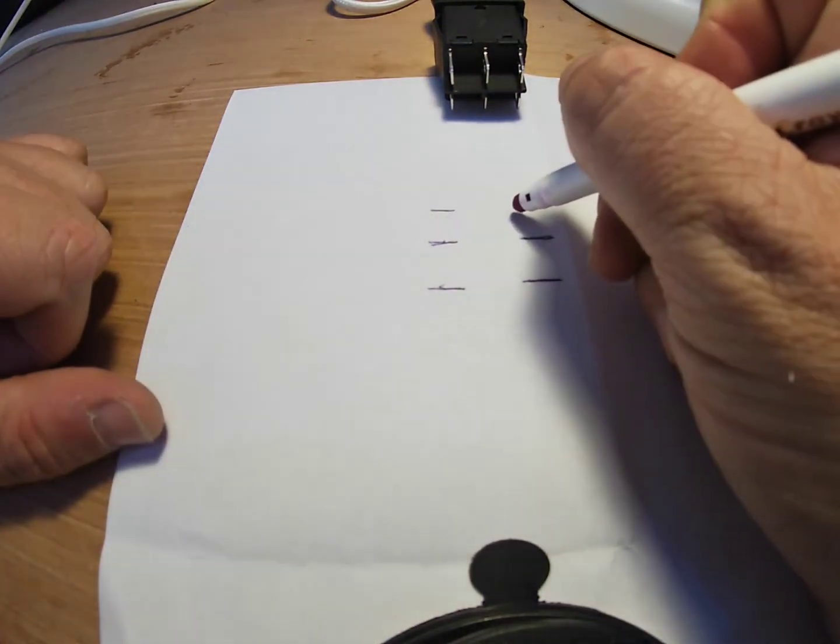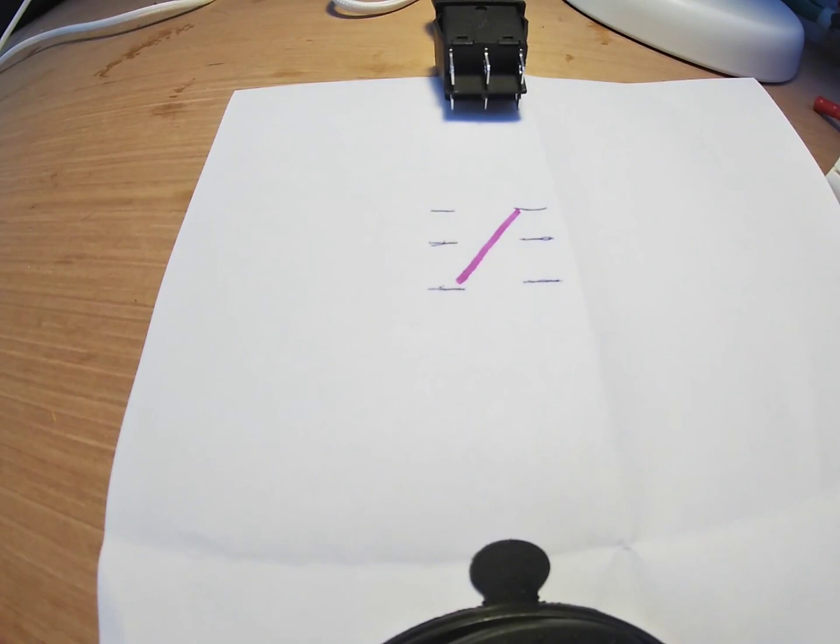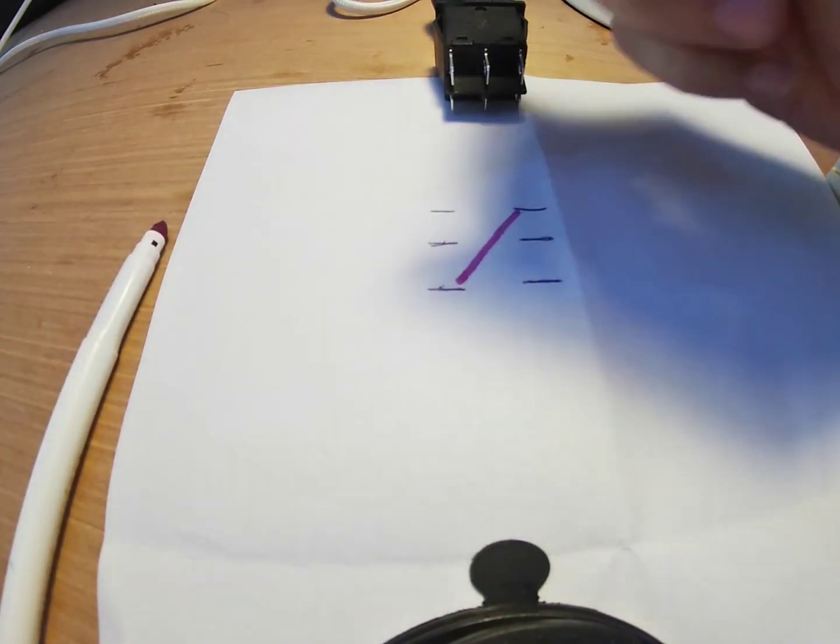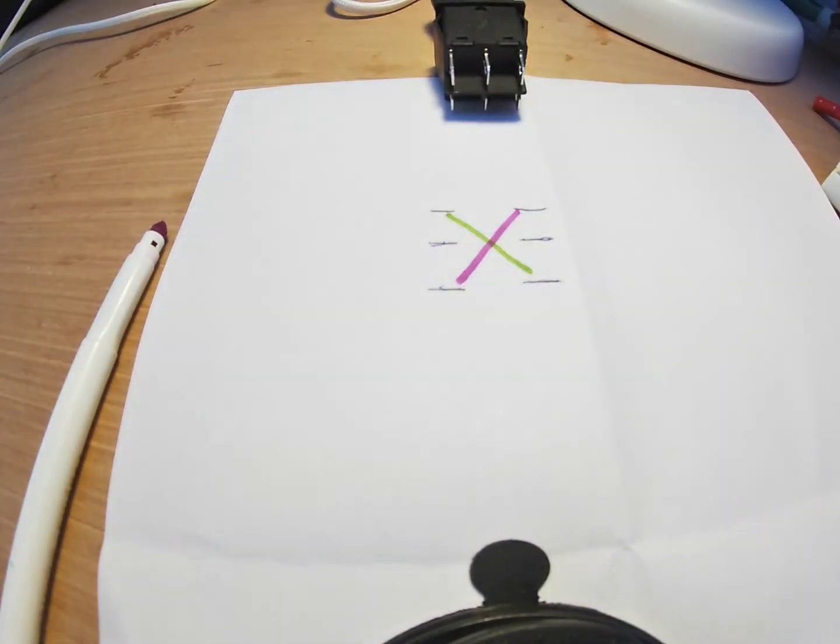So we need to run a positive line from here to here. You're going to have to excuse my pens. I'm going to use a negative cross line from here to here.